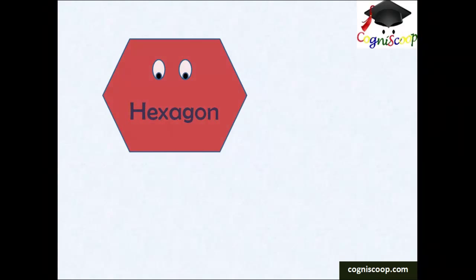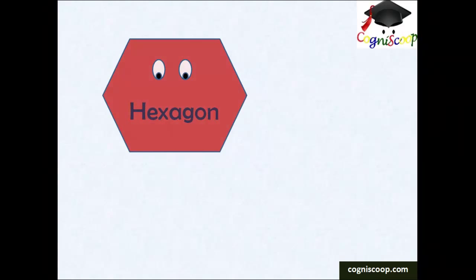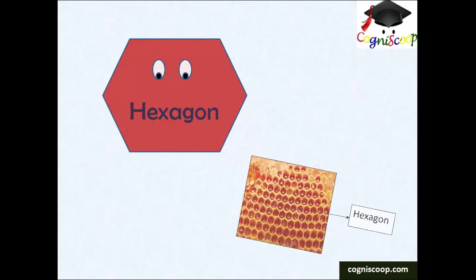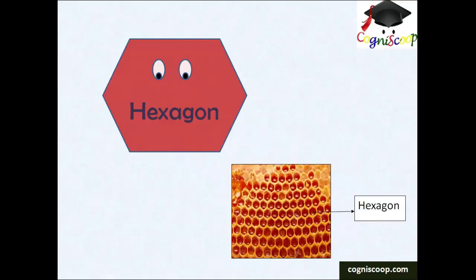Hexagon is a closed figure with six sides and six corners. The pattern on a beehive is its perfect example.